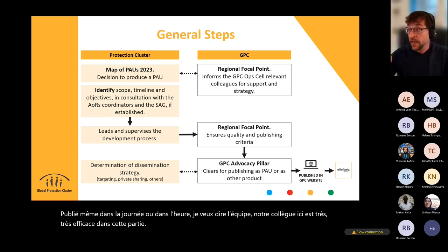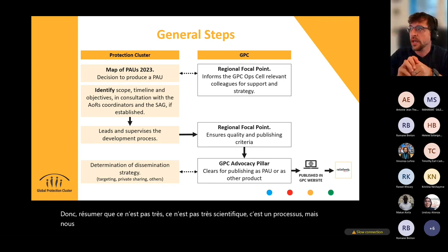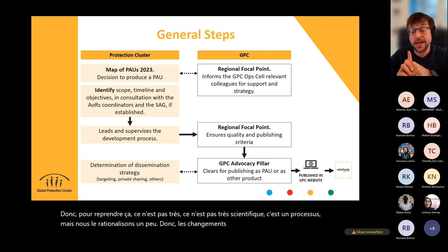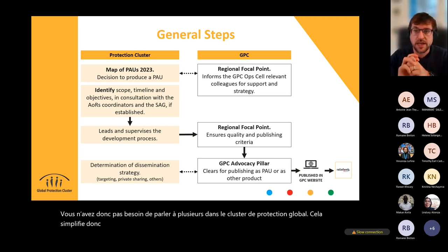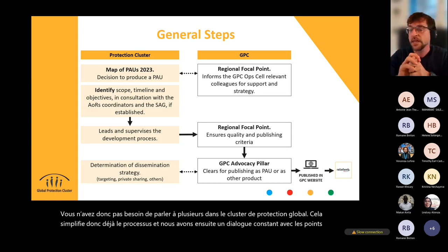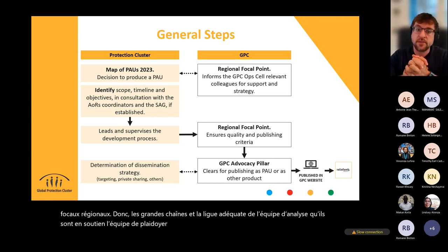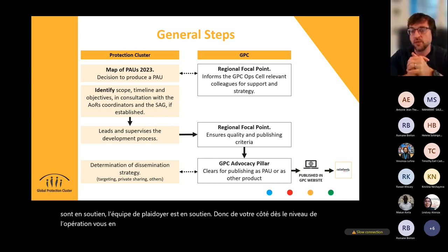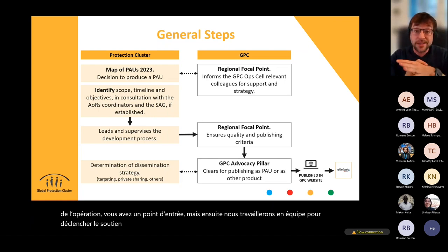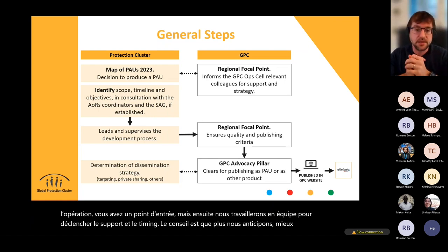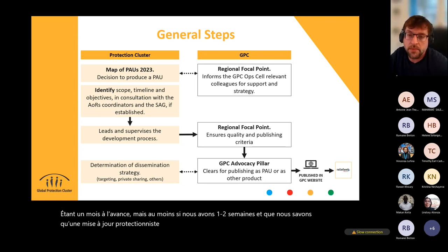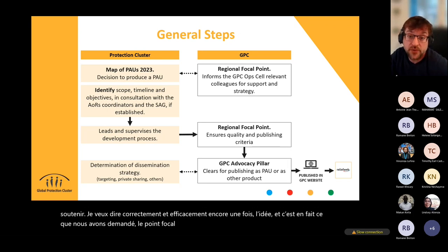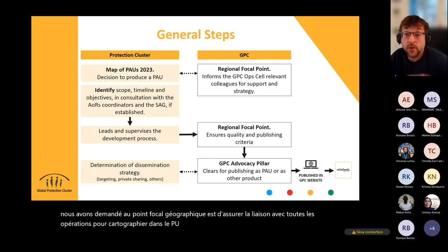Summarizing: the engagement between the operation and the GPC goes through the regional focal point — you don't have to speak with multiple people at the GPC, which simplifies the process. We have constant dialogue with the regional focal point; Vincenzo and other analysis team colleagues provide support, and the advocacy team is in support. From the operation level, you have one entry point, and we work as a team to trigger support. The advice is: the more we anticipate, the better we can support. If we have one to two weeks notice that a PAU is coming, we can really support you properly and efficiently. The goal is also to map out all PAUs for 2023 to better plan advocacy together.